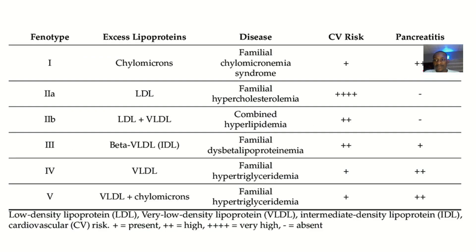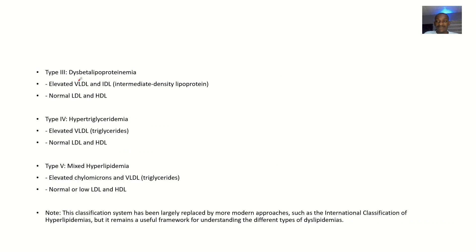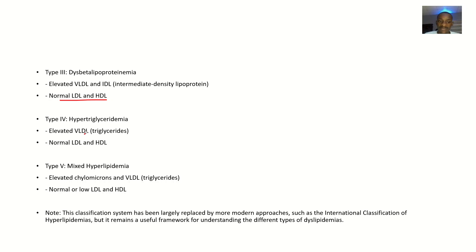This image here summarizes everything, so you can check it out. Moving forward, Type 3 is known as familial dysbetalipoproteinemia. In this type, you're having elevated levels of very low-density lipoproteins and also elevated levels of intermediate-density lipoproteins, but having normal levels of low-density lipoproteins and normal levels of high-density lipoproteins.